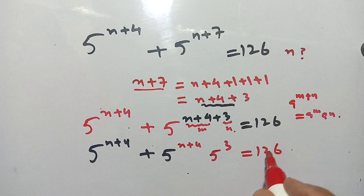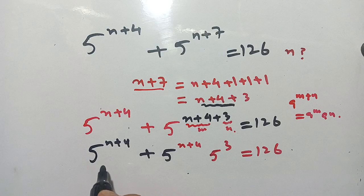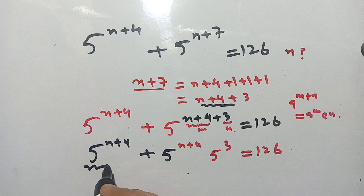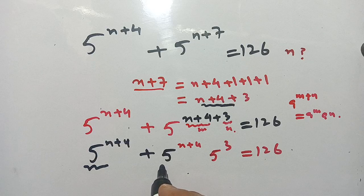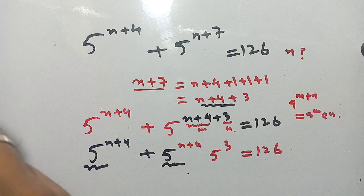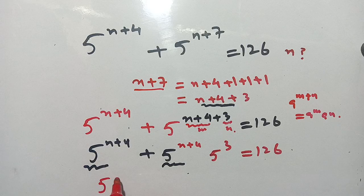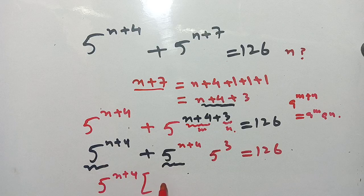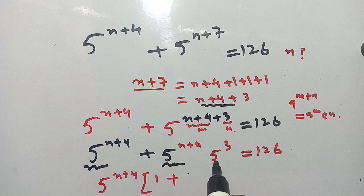Is equal to 126. You see that 5 power n plus 4 is common and we can take it out. We get 5 power n plus 4 times, and here remaining is 1 plus 5 power 3.